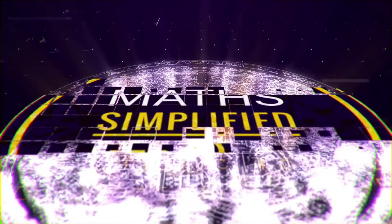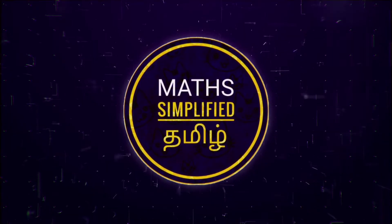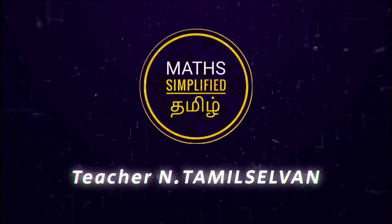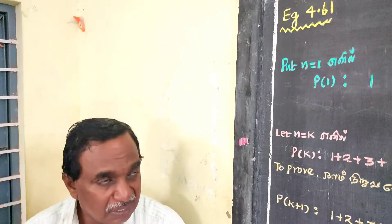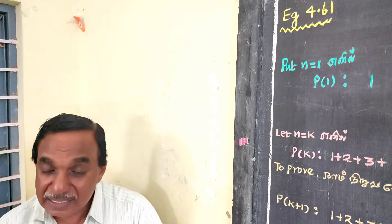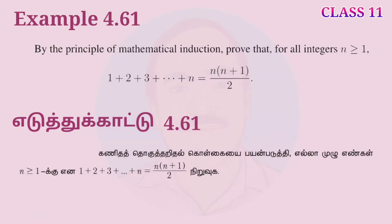I am going to show you example 4.61. By the principles of mathematical induction, prove that for all integers n greater than or equal to 1: 1 plus 2 plus 3 plus etcetera plus n is equal to n(n+1)/2.